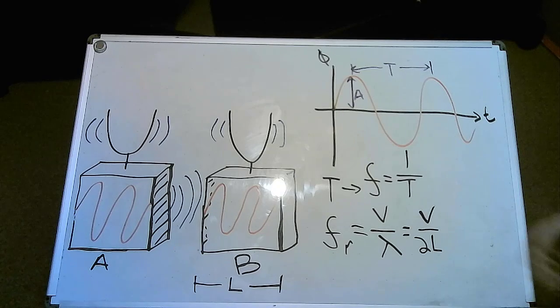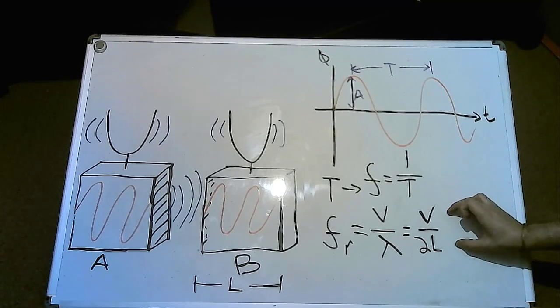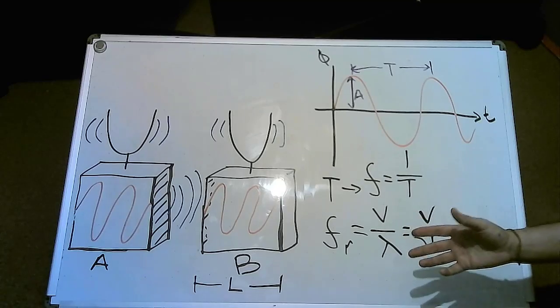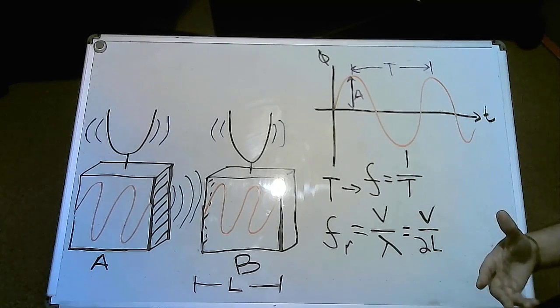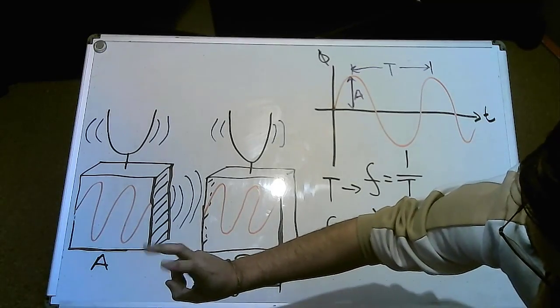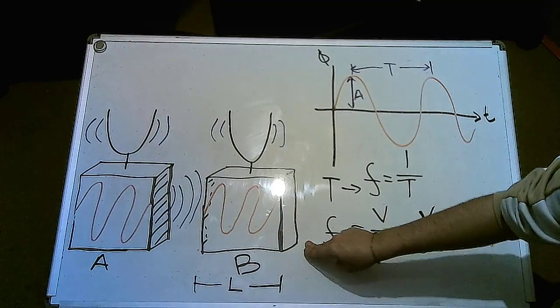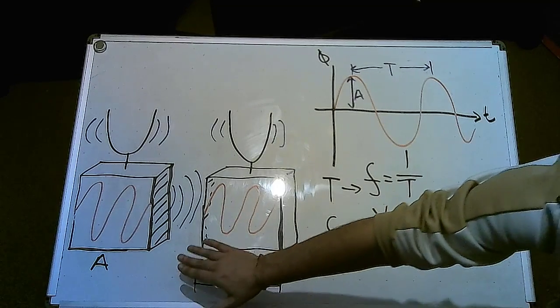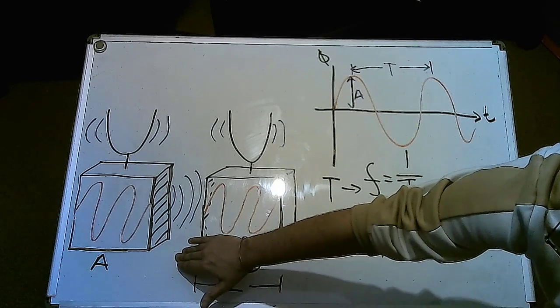We can relate that to frequency very easily by taking 1 over the period, which gives us our frequency. Now that we have a formal definition of what resonance frequency is mathematically, we can try and explain what it actually is. As we saw in our experiment, we had one tuning fork driving a wave in this box here.